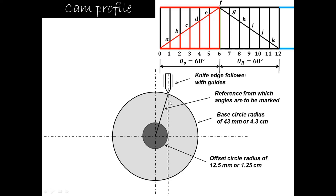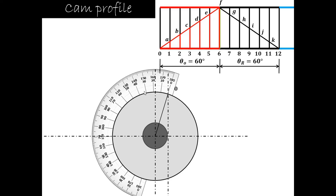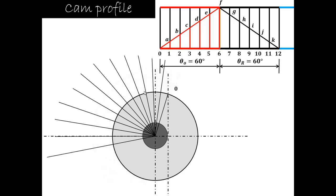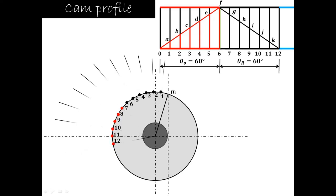We divide the 60-degree out stroke into 6 equal parts of 10 degrees each, and similarly the 60-degree return stroke into 6 equal parts of 10 degrees. The total is 120 degrees divided into 12 parts of 10 degrees each — the first 6 parts from positions 1 to 6 are for the out stroke, and the remaining 6 parts from 7 to 12 are for the return stroke. Mark these points on the base circle and remove the construction lines.